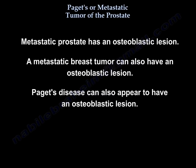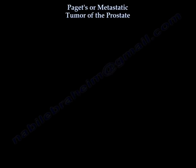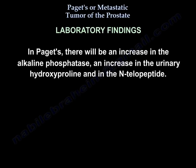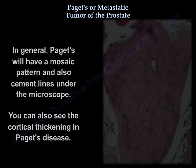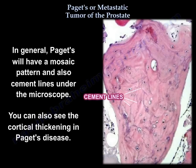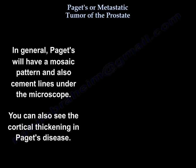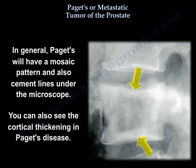Metastatic prostate has an osteoblastic lesion. A metastatic breast tumor can also have an osteoblastic lesion. Paget's disease can also appear to have an osteoblastic lesion. In Paget's disease, there will be an increase in the alkaline phosphatase, in the urinary hydroxyproline, and in the N-telopeptide. In general, Paget's will have a mosaic pattern and also cement lines under the microscope. You can also see the cortical thickening in Paget's disease.